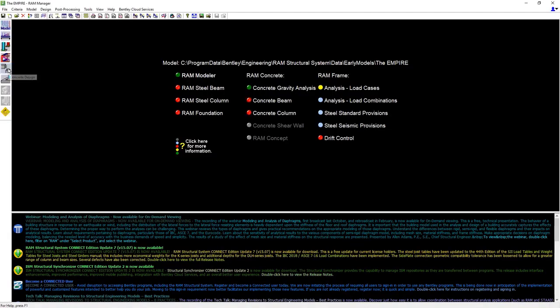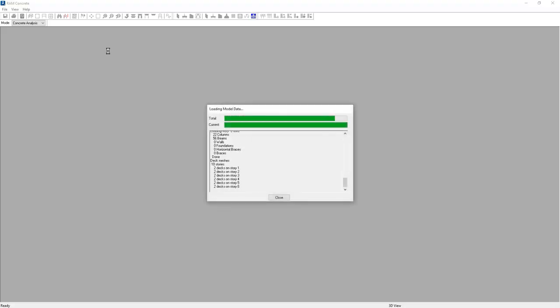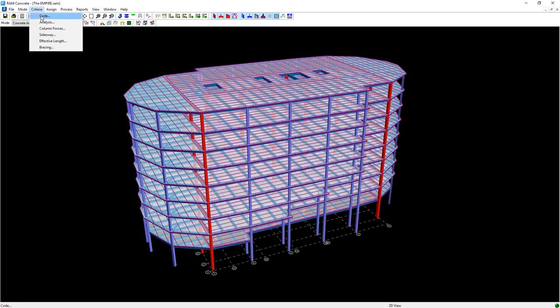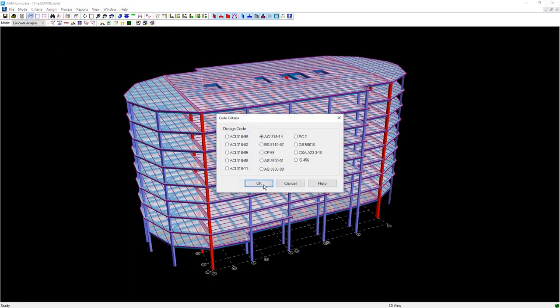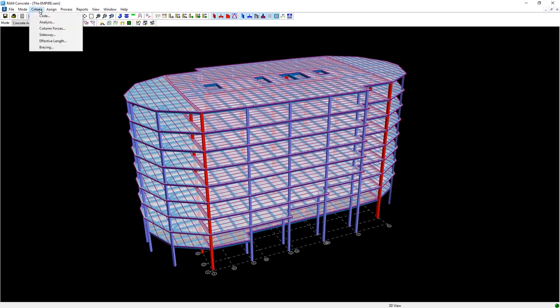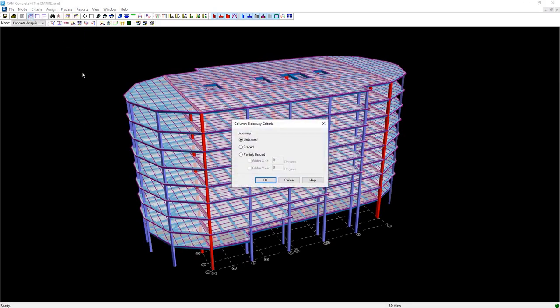With the analysis complete, we can now proceed to RAM Concrete for the concrete design. Select the desired code, and specify that the structure is unbraced against sway, as we found from the q stability index value.